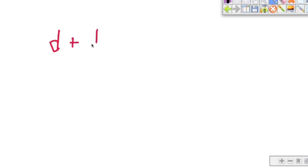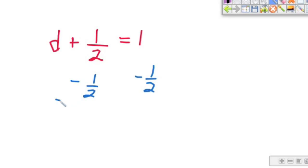d plus 1 half equals 1. Let's throw a little something different in the mix here. So what's the inverse of adding 1 half? Subtracting 1 half. These cancel. d falls down. We got d by itself. That's our goal. So now you have one whole take away half. If you had one whole apple and you took half of it away, how much would you be left with? You would be left with half an apple.